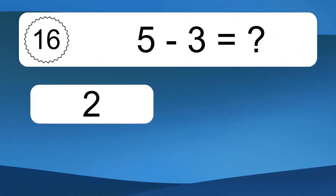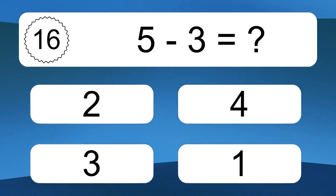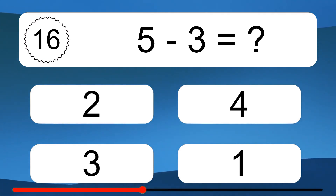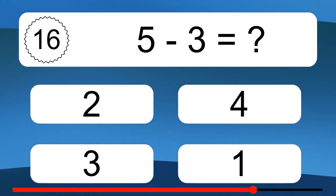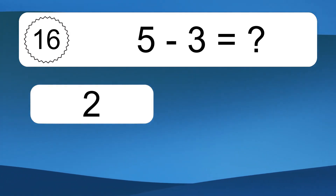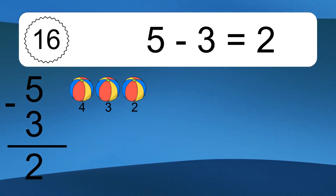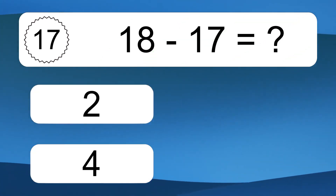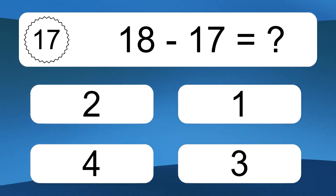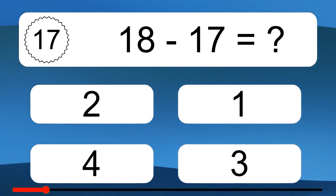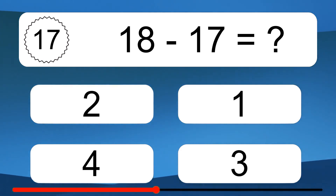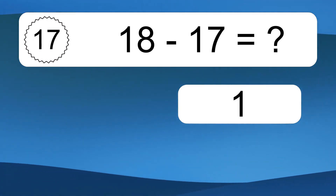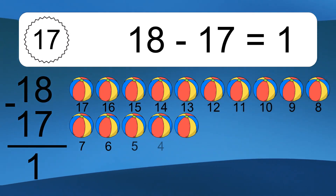5 minus 3 equals what? 5 minus 3 equals 2. Let's count it: 4, 3, 2.